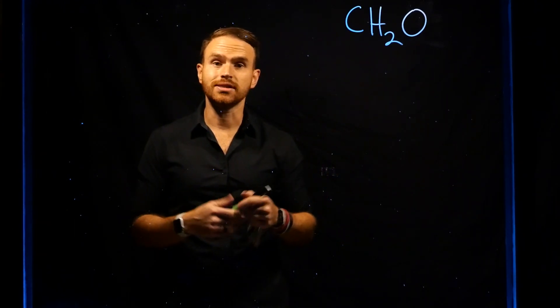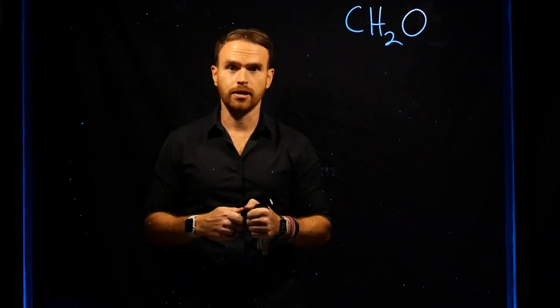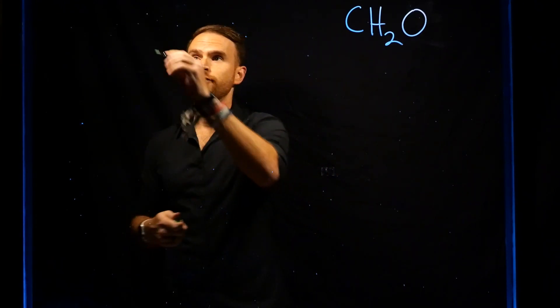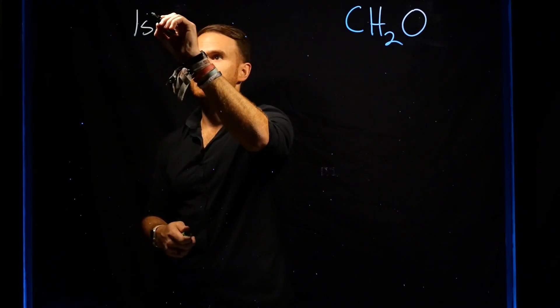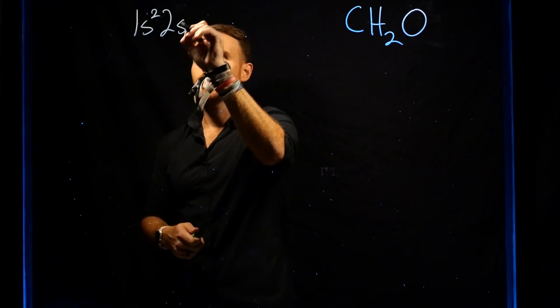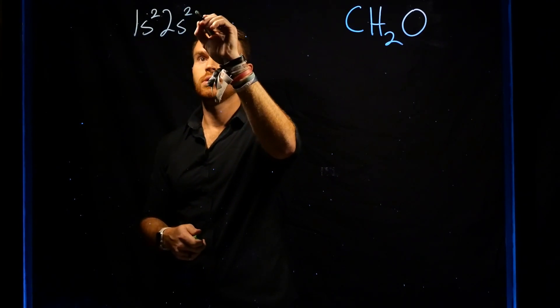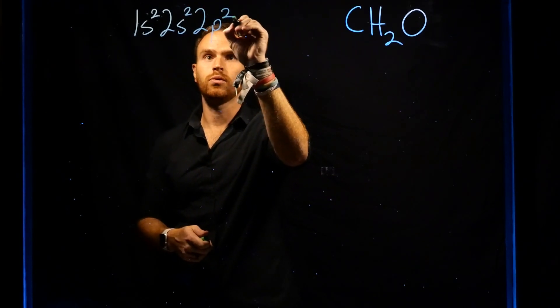Consider carbon, which is the sixth element on the periodic table. Its full electron configuration is 1s2, 2s2, 2p2.